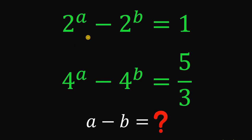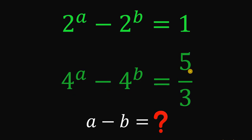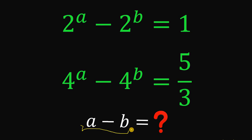Given this equation: 2 raised to the power of a minus 2 raised to the power of b equals 1, and 4 raised to the power of a minus 4 raised to the power of b equals 5 over 3, our goal in this question is to find the numerical value of a minus b.